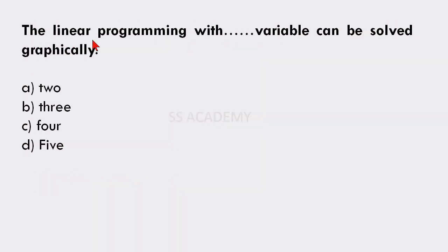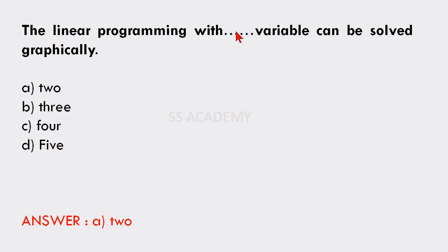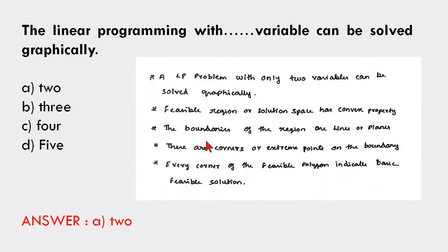Next question: Linear programming with how many variables can be solved graphically — 2, 3, 4, or 5? The answer is option A: 2 variables. In graphical techniques we have two axes, X and Y, so only 2-variable problems can be solved graphically. There is no limitation on the number of constraints. A linear programming problem with only 2 variables can be solved graphically.